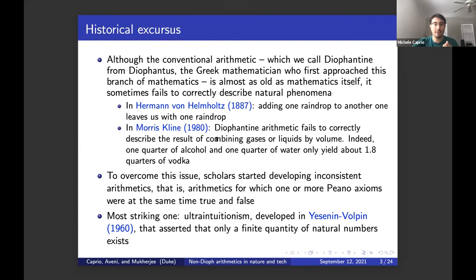Before starting, let me give a historical excursus of how the idea of non-Diophantine arithmetics came about. Although the conventional arithmetic called Diophantine, after the Greek mathematician who first approached this branch of mathematics, is almost as old as mathematics itself, it sometimes fails to correctly describe natural phenomena. For example, von Helmholtz argued that adding one raindrop to another one leaves us with one raindrop. Maurice Klein in his 1980 paper showed that Diophantine arithmetic fails to correctly describe combining gases or liquids by volume. One quarter of alcohol and one quarter of water only yield about 1.8 quarters of vodka.